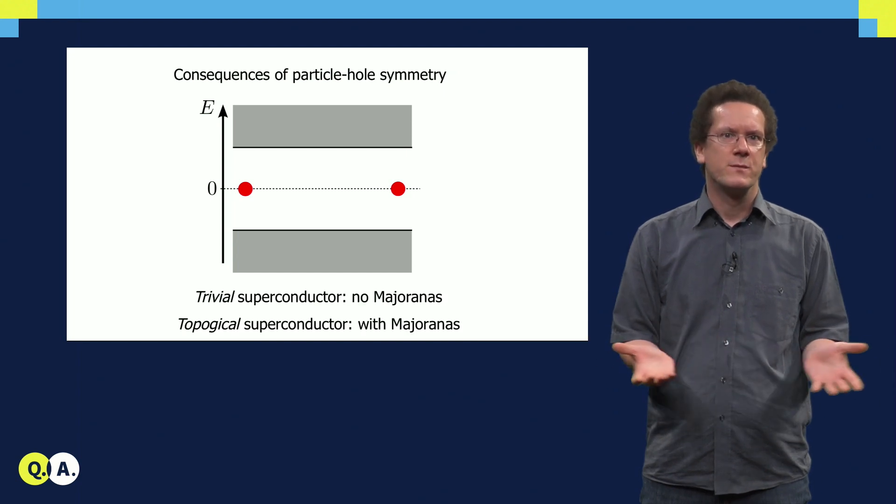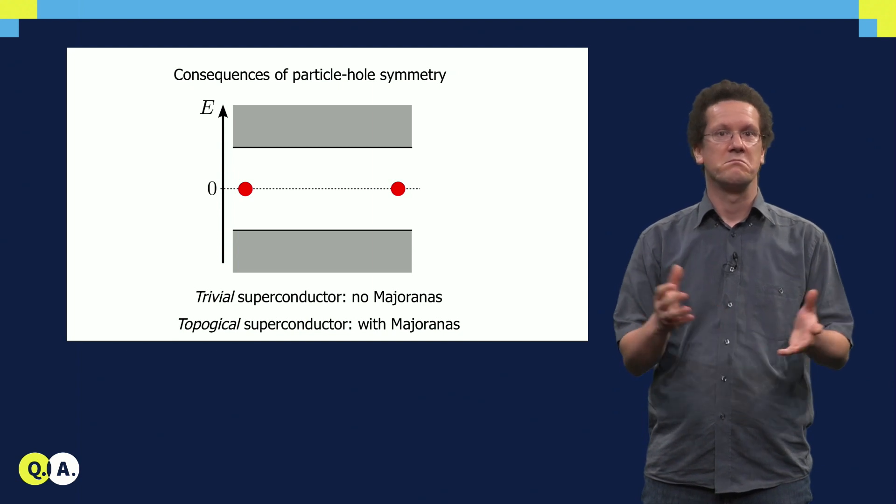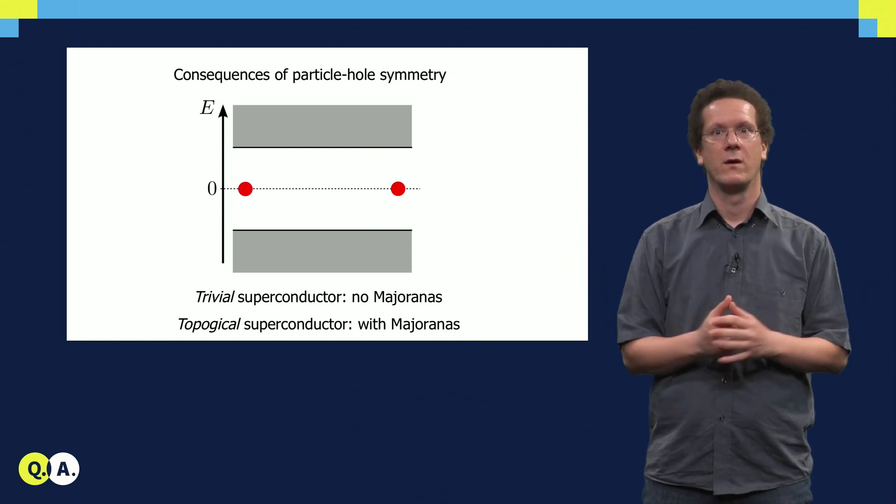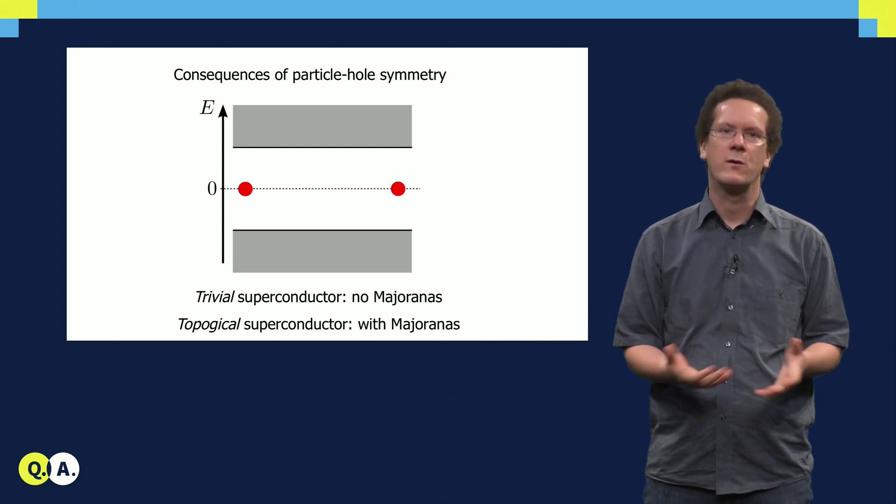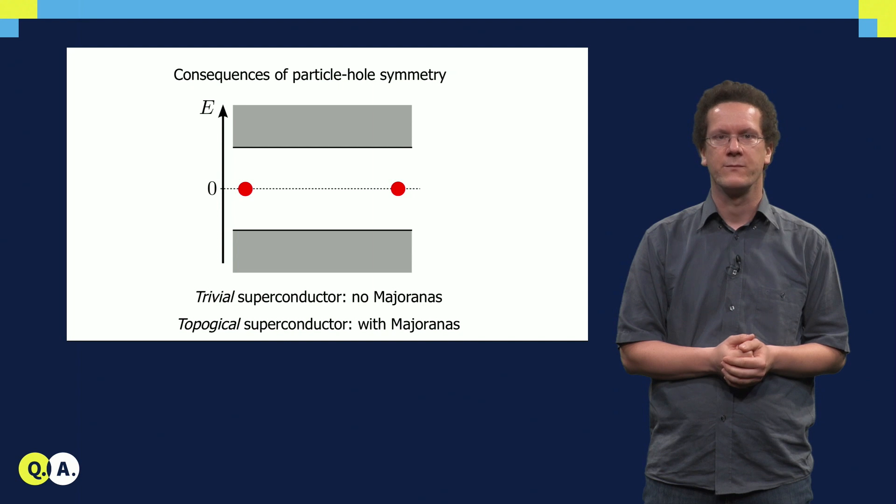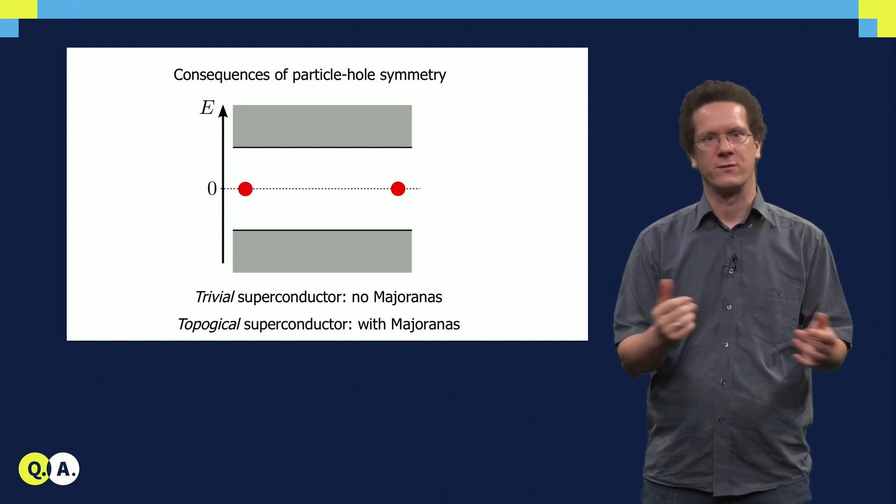We can thus distinguish two kinds of superconductors. Either there are Majorana bound states, and then they are protected, or there are no Majoranas at all. A superconductor that has Majoranas we call a topological superconductor. A superconductor without Majorana fermions we call a trivial superconductor.